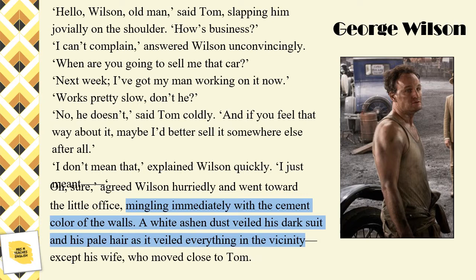George Wilson is not just grey — he is the colour of the walls. He is dust. His wife walks through her husband as if he were a ghost to shake hands with Tom, showing the reader that even she doesn't respect George. Later on, Tom will say, 'George is so dumb he doesn't know he's alive.' And yes, that is a foreshadowing alert. How would you describe Tom's relationship with George? And how much do you judge Tom at this point?